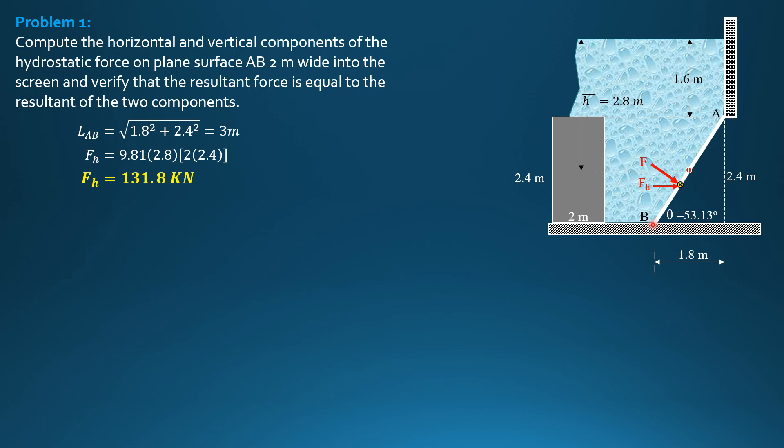FV, on the other hand, is equal to the weight of liquid bounded by the curve, the plane surface, the vertical lines through the endpoints, and the liquid surface, imaginary or real. So this FV here is equal to specific weight times volume of this water.